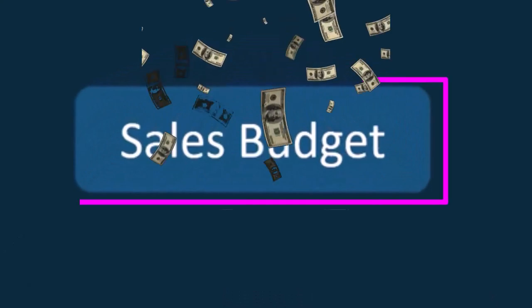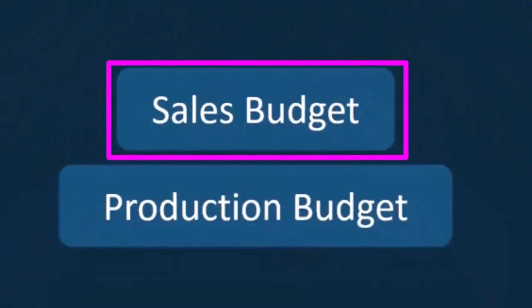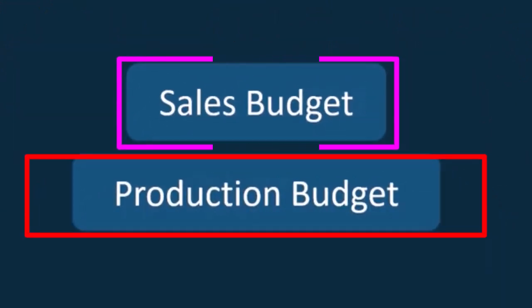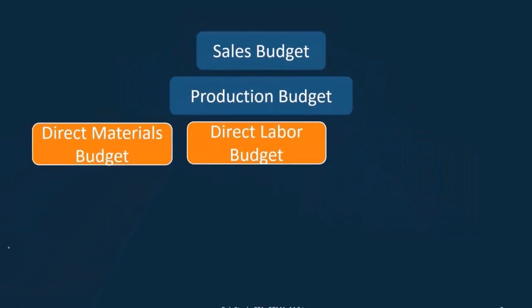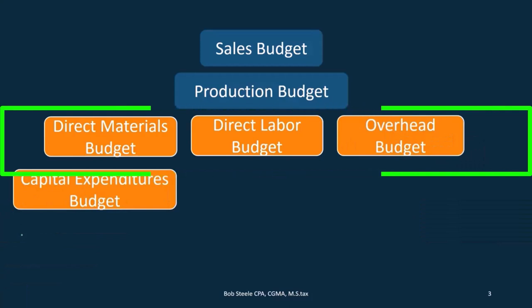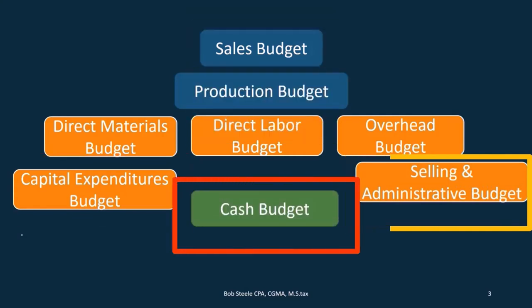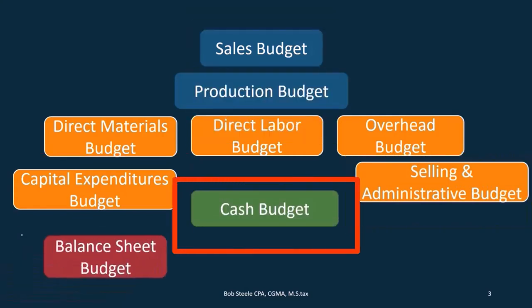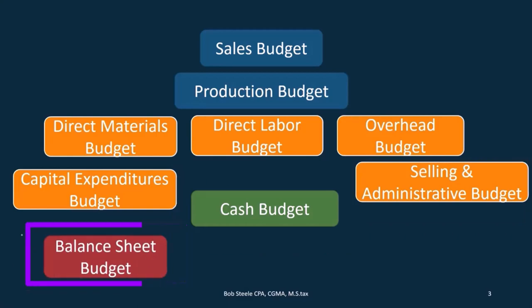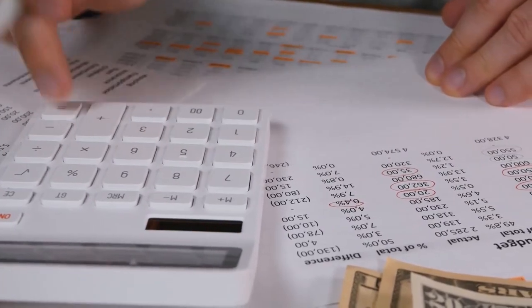Let's go through the order in which we need to complete the budget. We do the sales budget first, which is needed to do the production budget. Once that's done, we look at the direct materials budget, the direct labor budget, and the overhead budget, as well as capital expenditures for that time period and the selling and administrative budget. Then we do the cash budget, and then we move on to the balance sheet — looking at calculations needed for the cost of goods sold section.